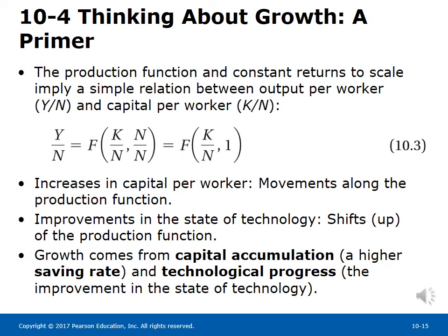Output per Worker and Capital per Worker: The production function and constant returns to scale imply a simple relation between output per worker (Y/N) and capital per worker (K/N). Setting x equal to 1/N in equation 10.2 yields equation 10.3, showing that output per worker is a function of capital per worker. Increases in capital per worker lead to movements along the production function, while improvements in the state of technology lead to upward shifts. Under constant returns to scale, the two sources of growth are capital accumulation — driven by a higher saving rate — and technological progress.